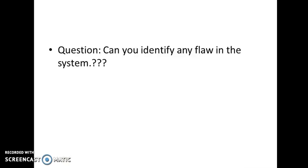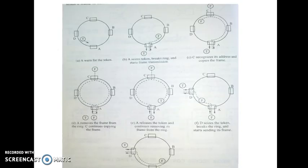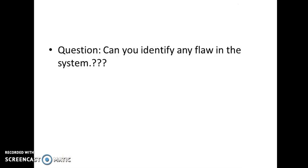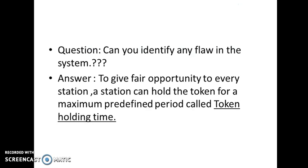Can you identify a flaw in the system? One flaw is that a station could keep the token with itself and never return it, meaning only that station would have the right to send and no other station would get an opportunity. To avoid this and give a fair opportunity to every station, a station can hold a token only for a maximum pre-defined period called the Token Holding Time. The approximate value for this is around 10 milliseconds. After 10 milliseconds, it must send the token back so that everybody can send data if they want.